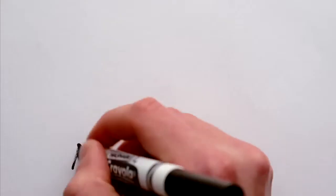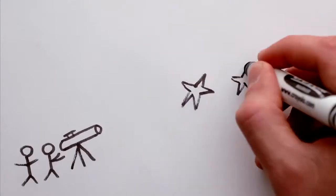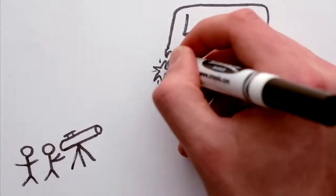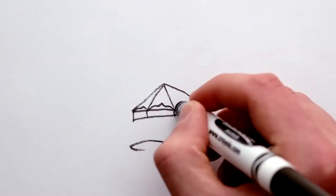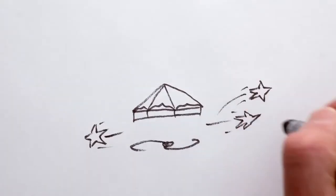Otherwise, it'll fly off into space. The problem is, the force of gravity from all the stars we can see isn't strong enough to hold galaxies together. All the stars should be flying off the edge of the merry-go-round. But they're not.